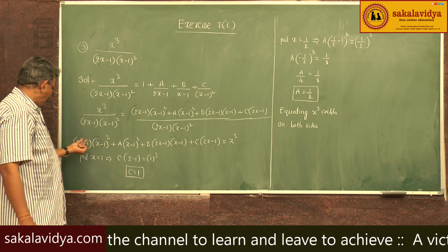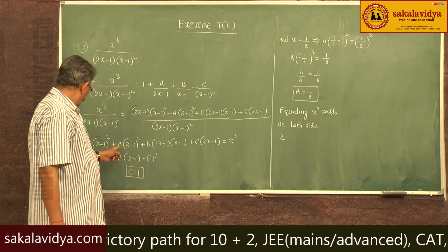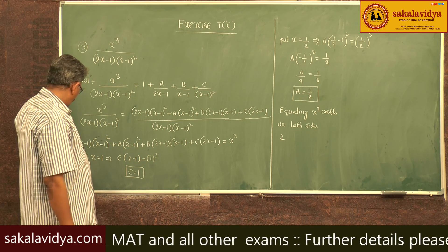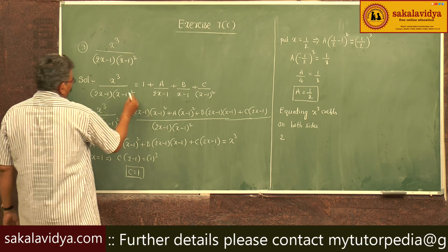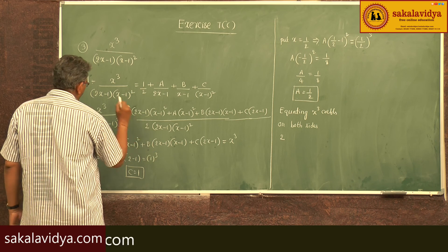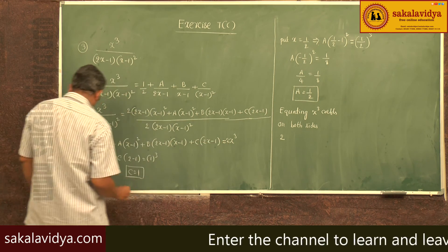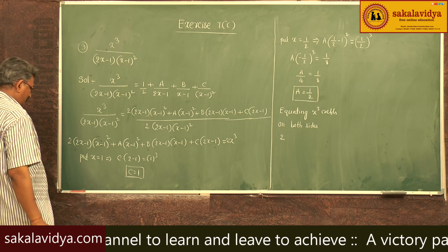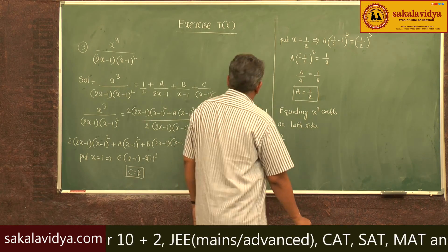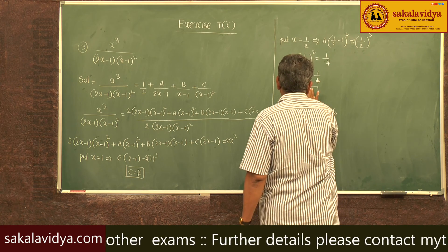Here x squared into 2x gives 2x cube, so the x cube coefficient is 2. Comparing both sides, 2 times C equals 2, and with the 1 by 2 factor and LCM also 2 times, we get A equals 1.